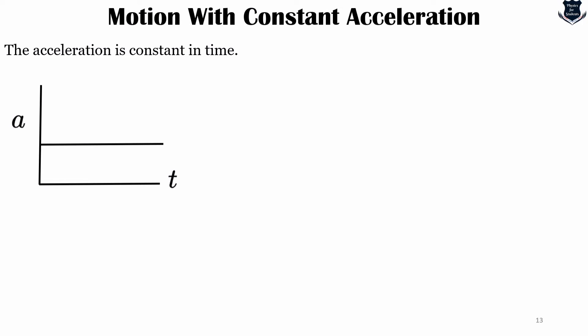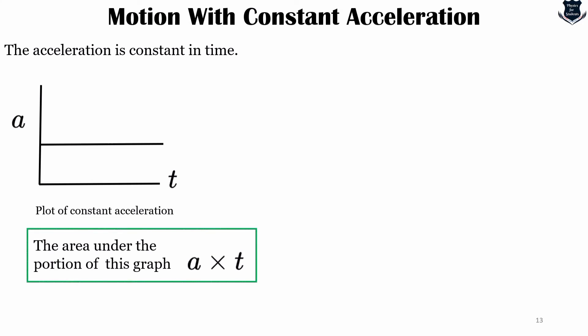The graph of acceleration that is constant in time would look like this. The area of this graph between the time 0 and time t is just what we call a multiplied by t.